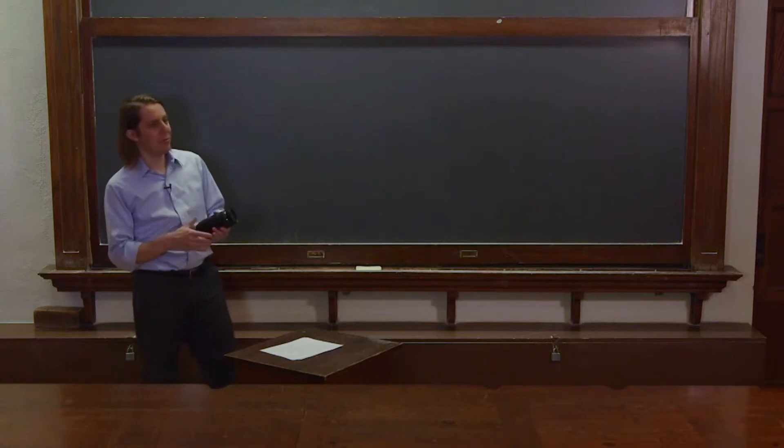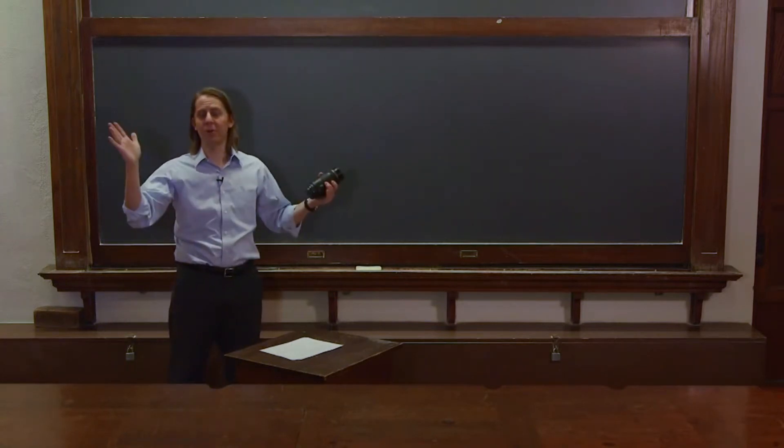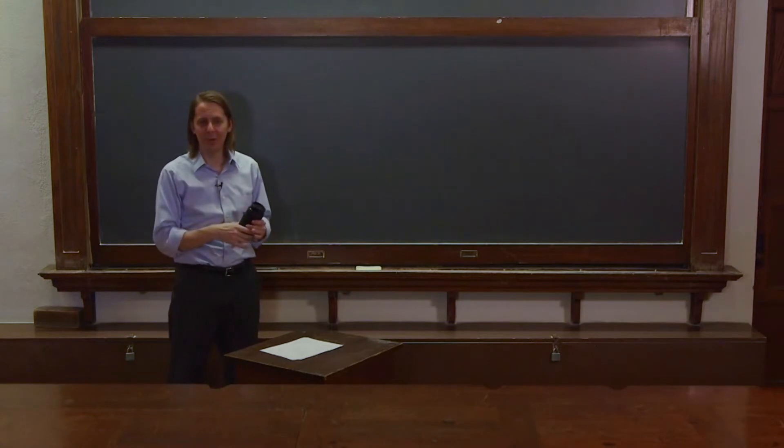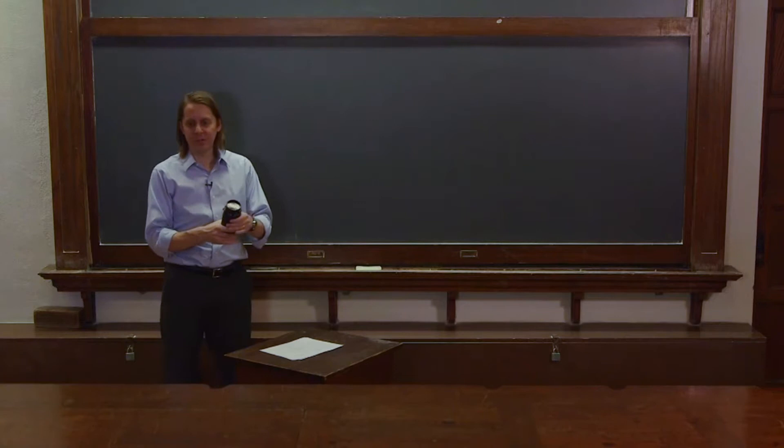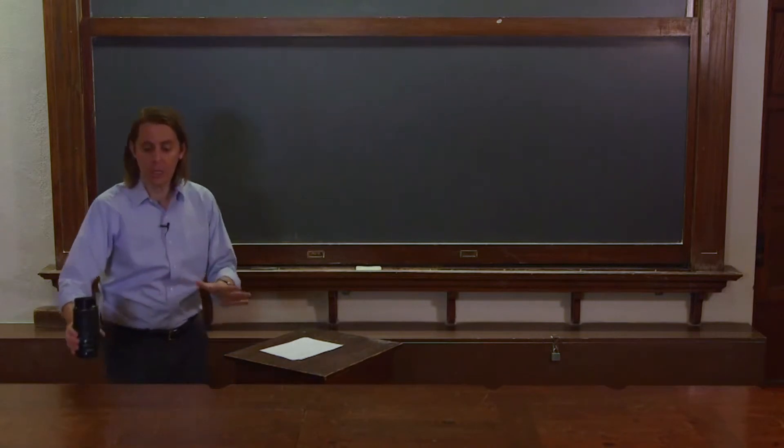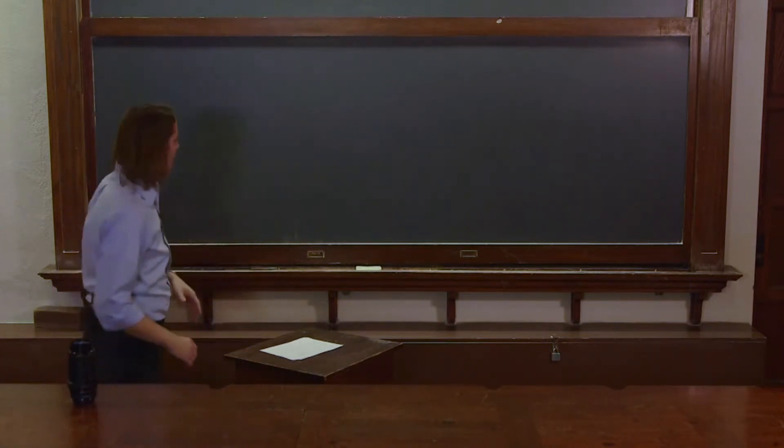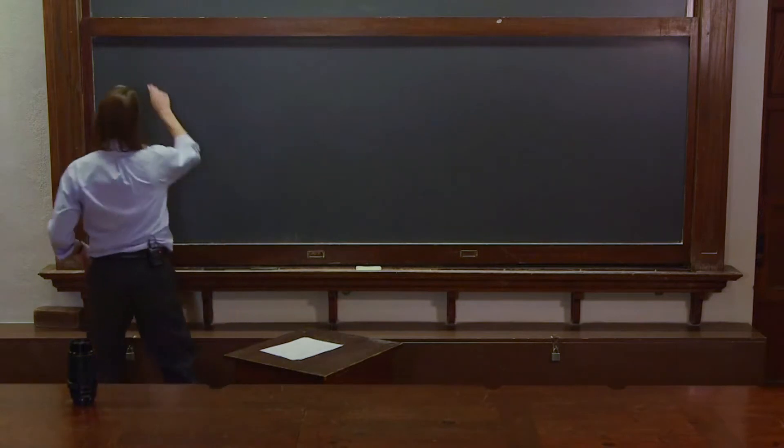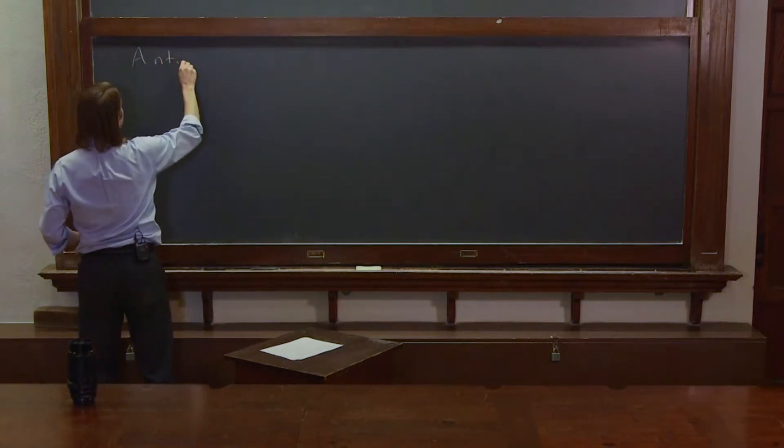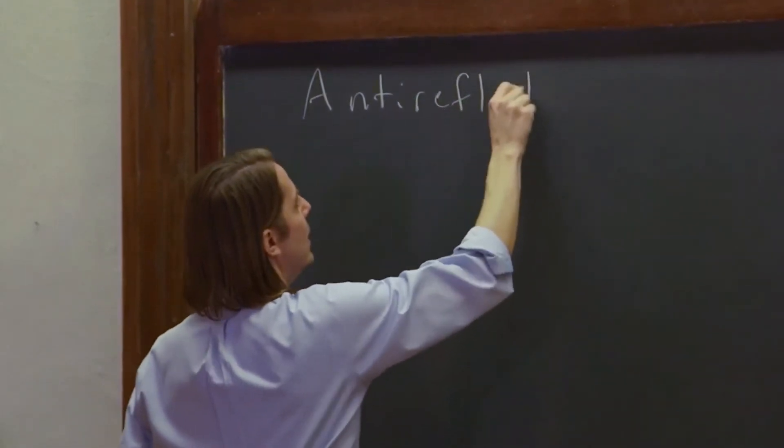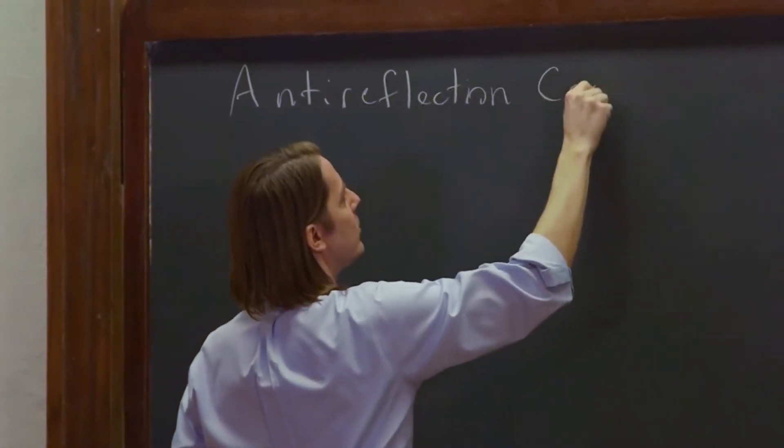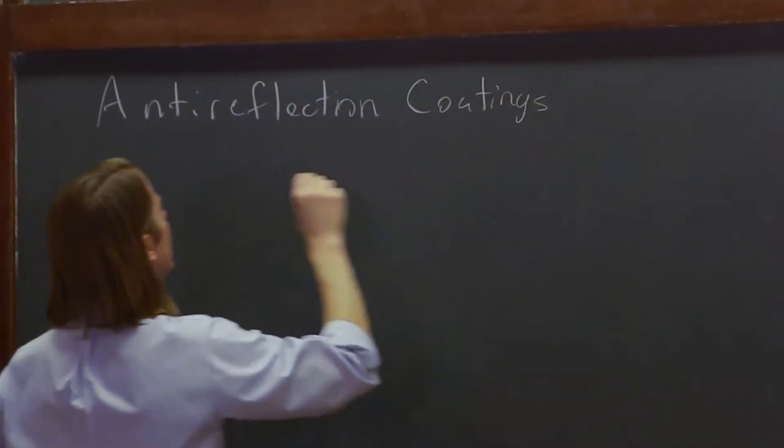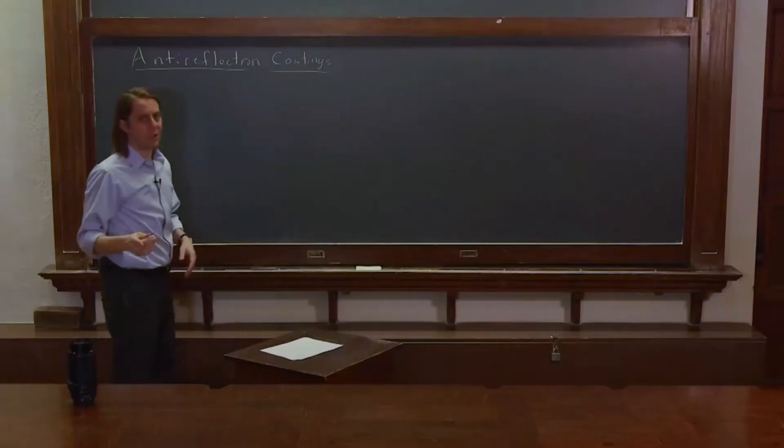And just losing half the light isn't that bad, but then half the light goes in all kinds of bad places. So in addition to losing half, it would show up as just a white background. So it's good to be able to cancel a lot of those reflections. So let me set this down very gently. And we will think about anti-reflection coatings and how we can use what we just learned to reduce reflections as much as we can.